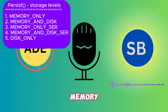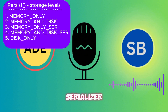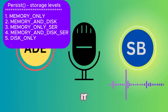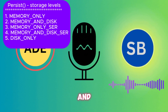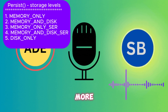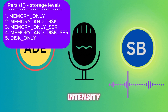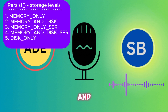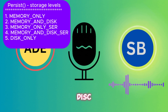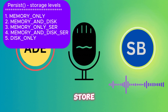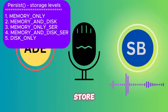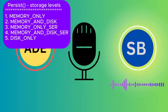The second level is MEMORY_ONLY_SER, which stores the RDD as serialized Java objects. The main advantage of this format is that it is more space-efficient, though it requires more CPU intensity.